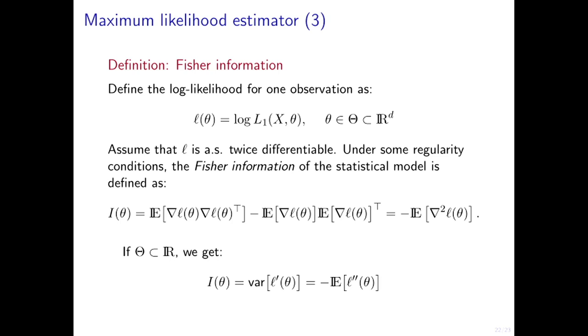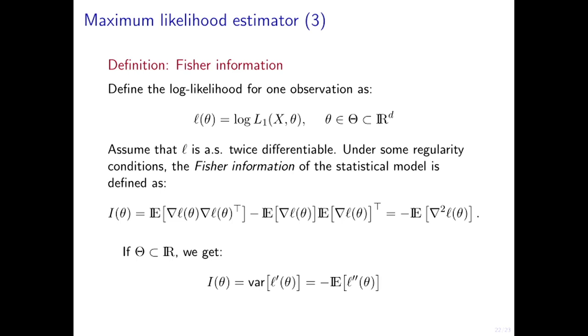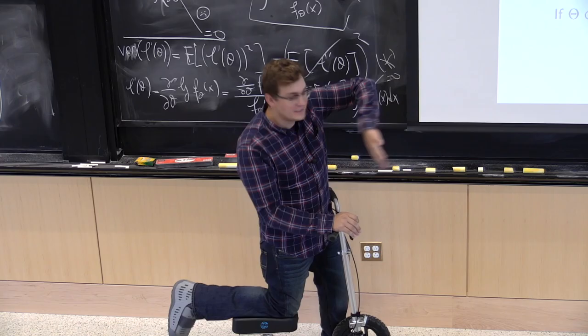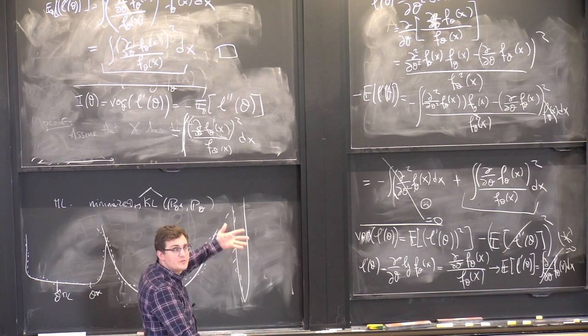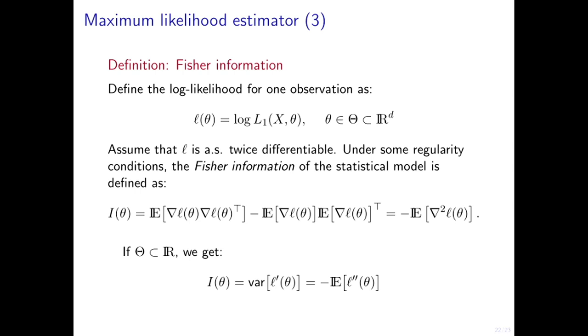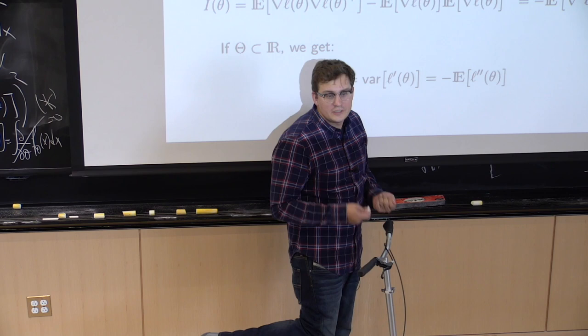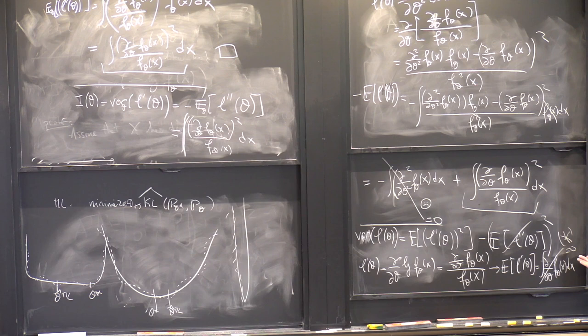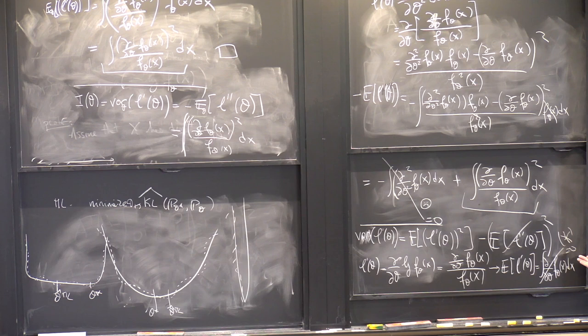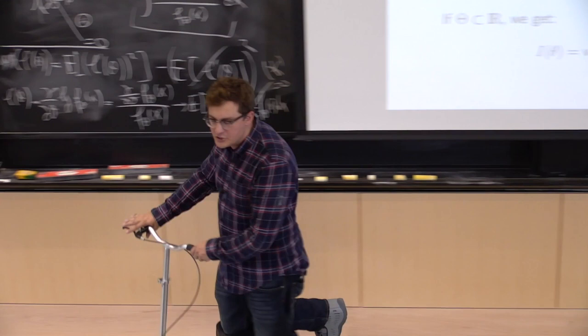The negative comes from the fact that we're maximizing the likelihood rather than minimizing, but the curvature is the same whether we flip the picture or not. So the Fisher information is telling me how curved the likelihood is around the maximum, and therefore how robust the maximum likelihood estimator is — how close it will be to the true parameter.